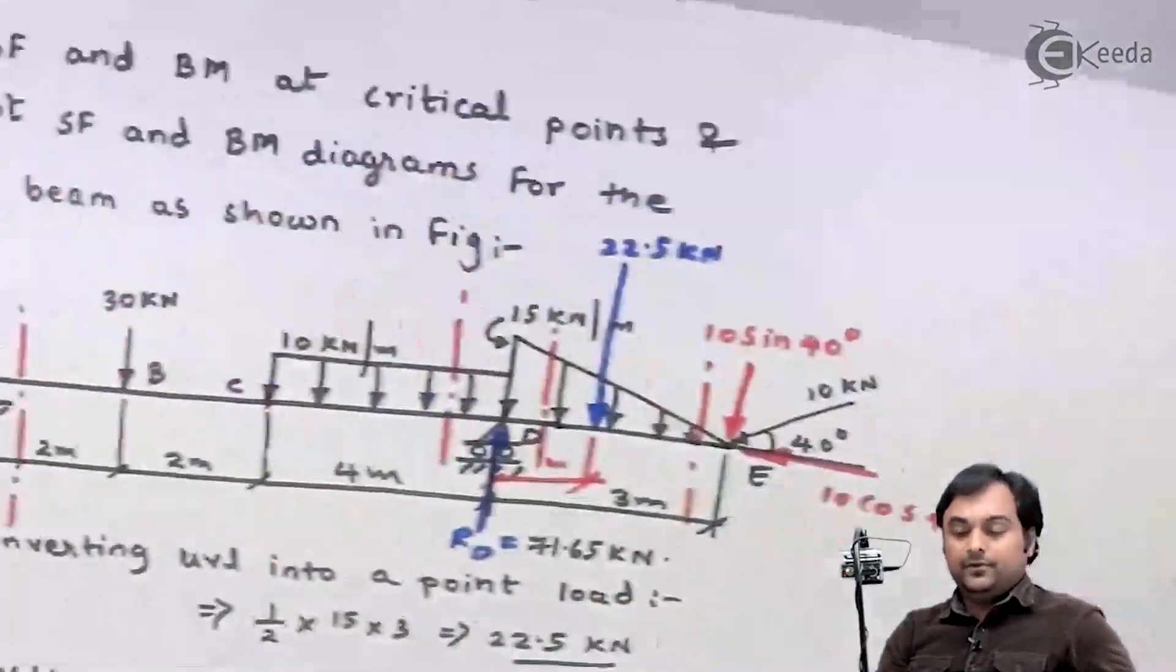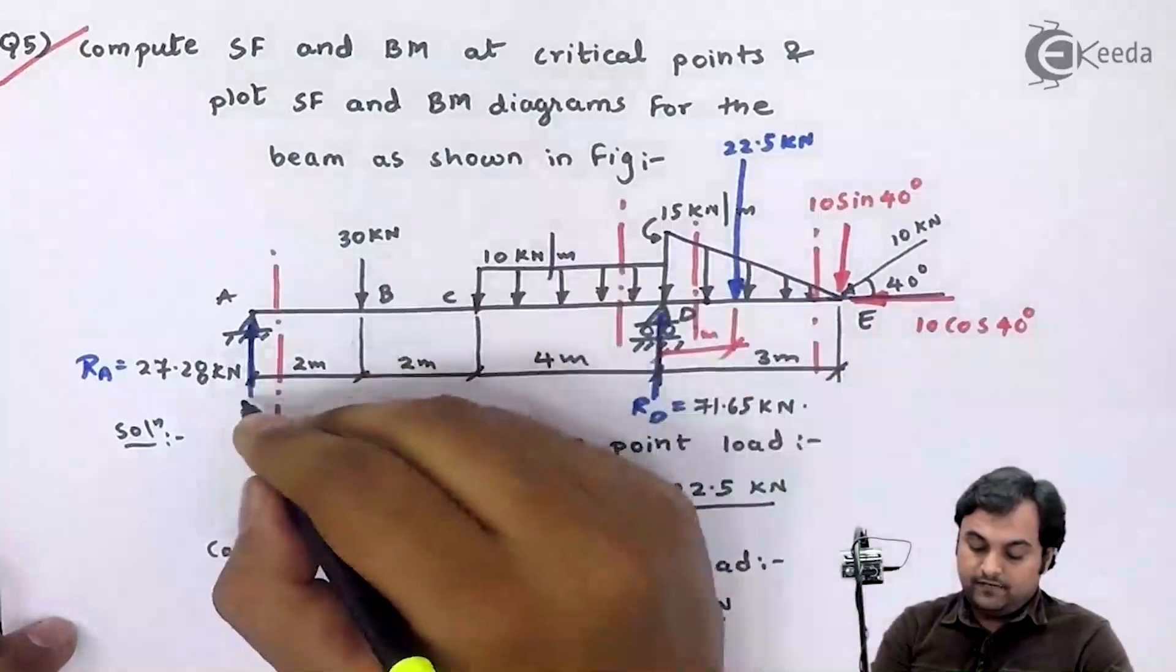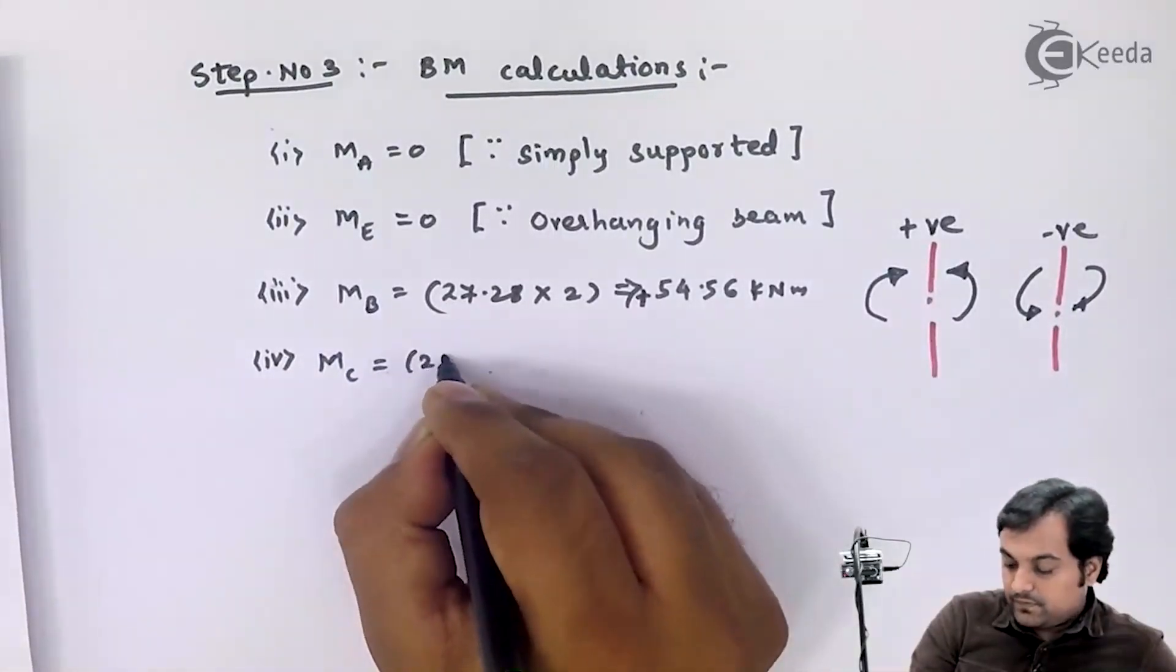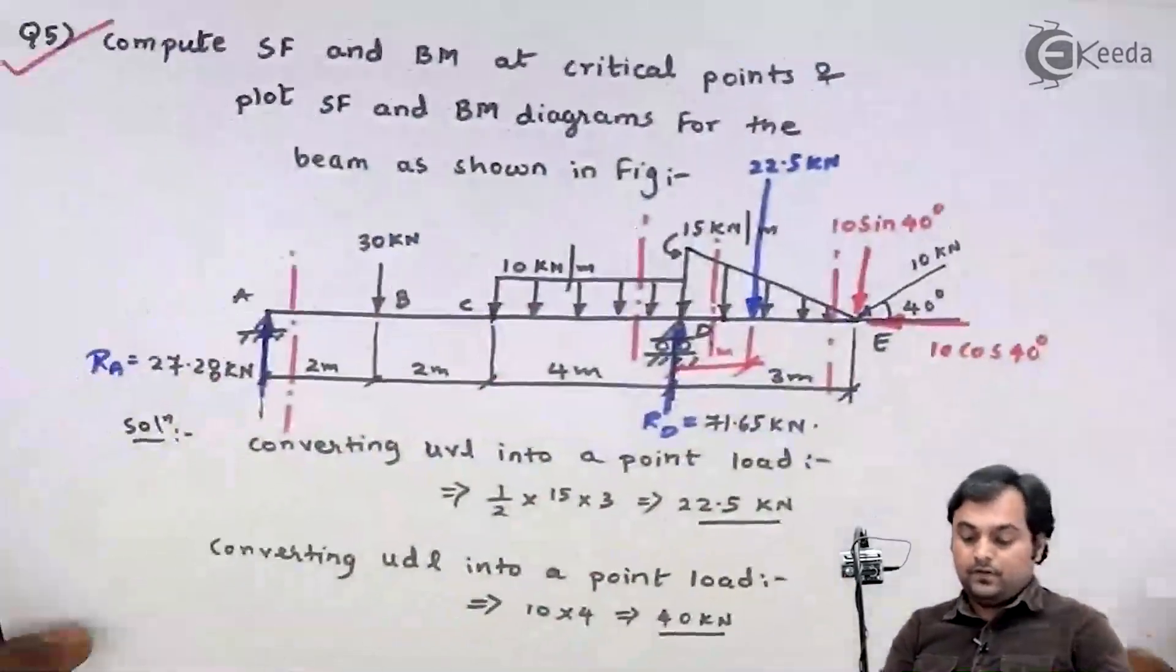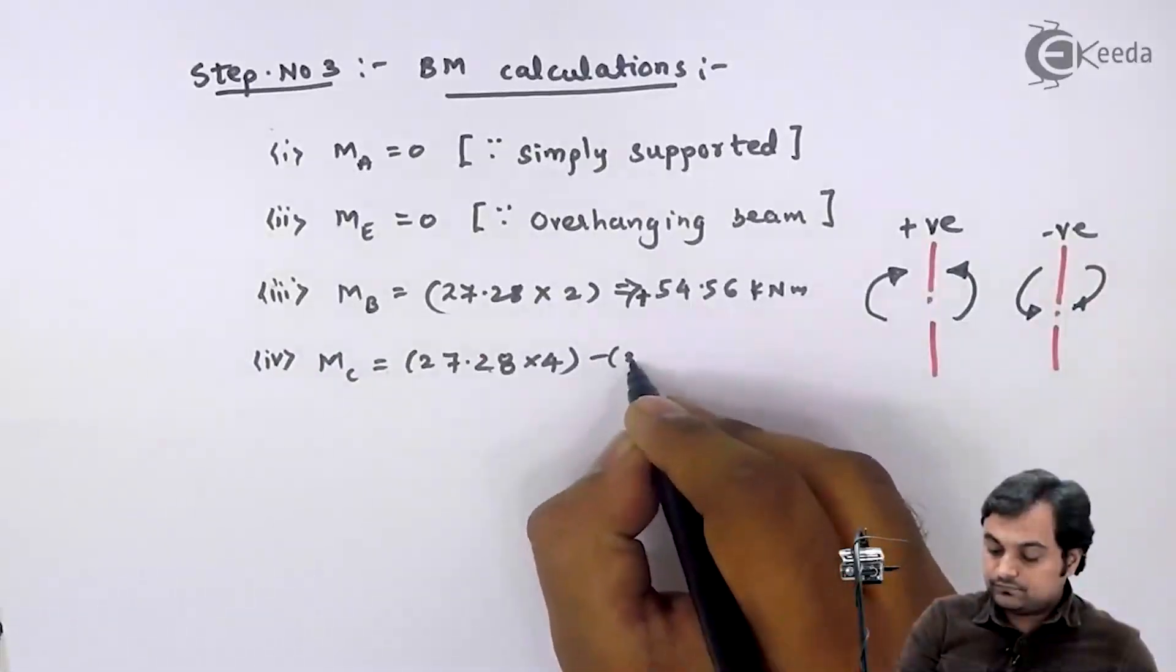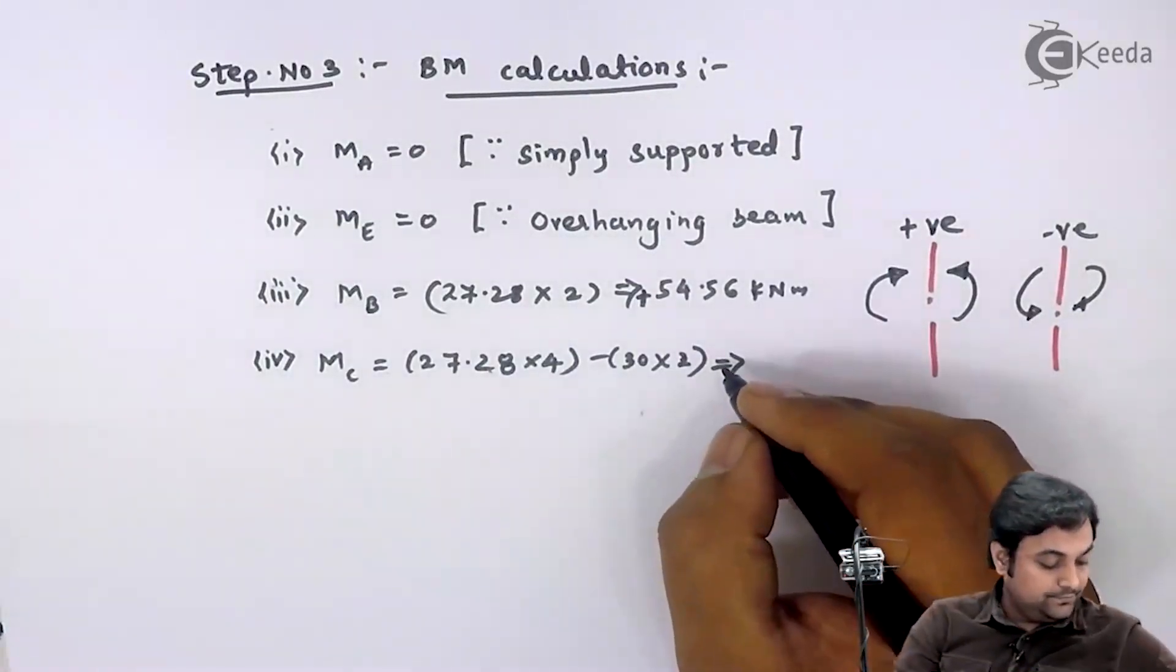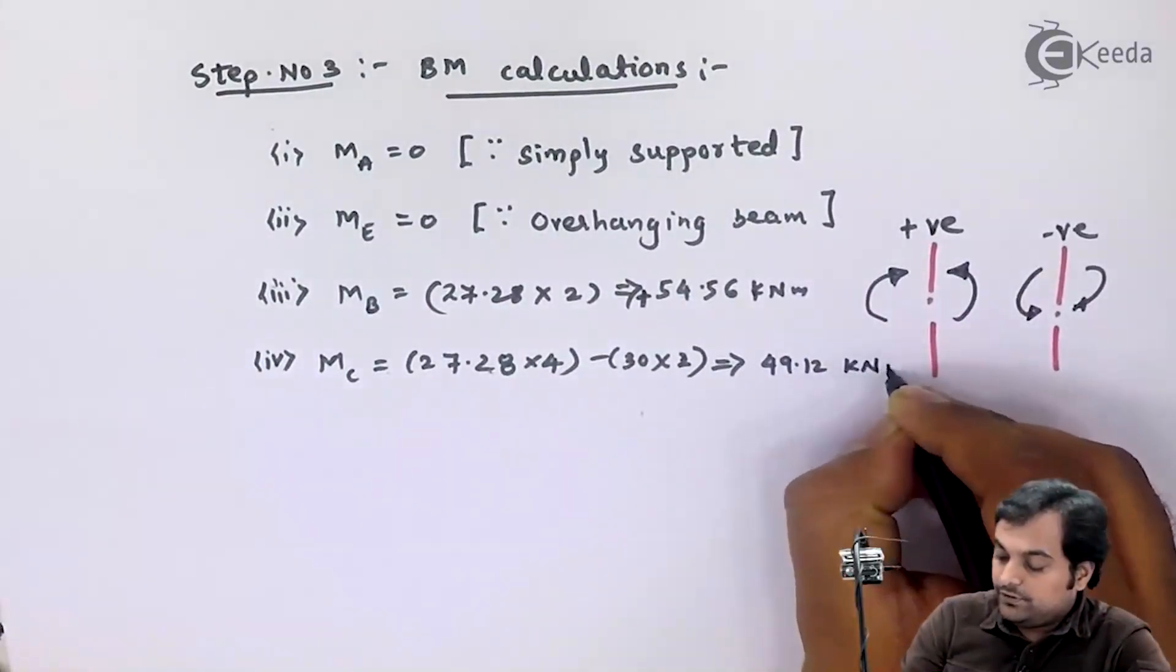Next bending moment at C: my section if it is at C then it will be 27.28 into 4 minus 30 into 2. So moment at C is equal to 49.12 kilonewton meter.